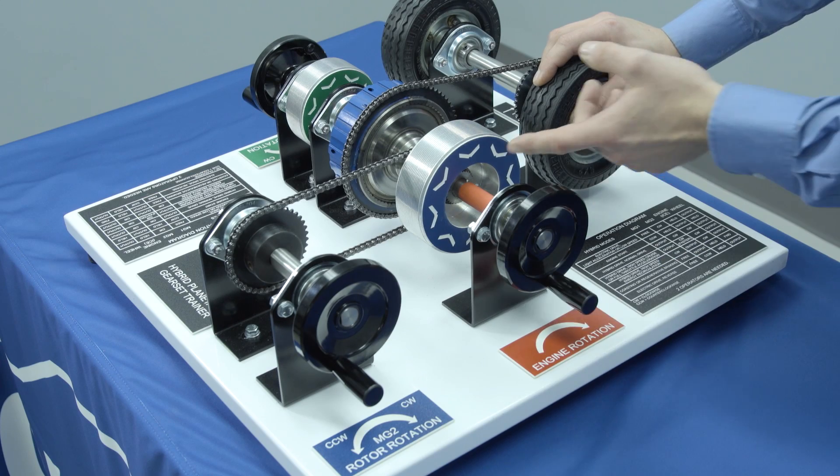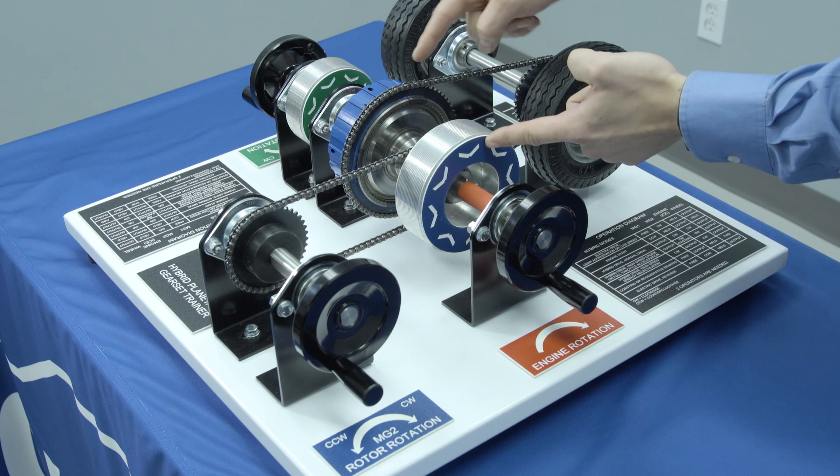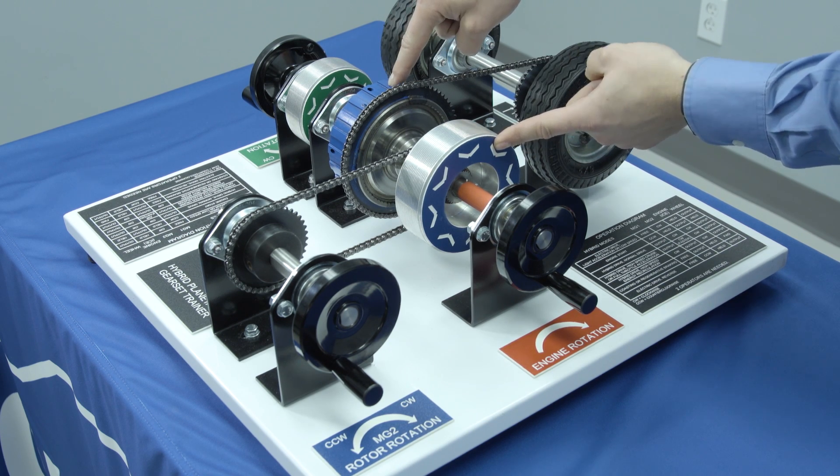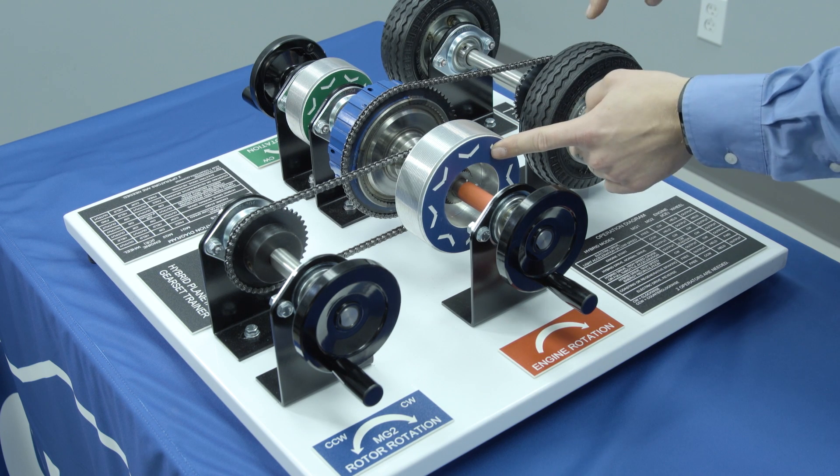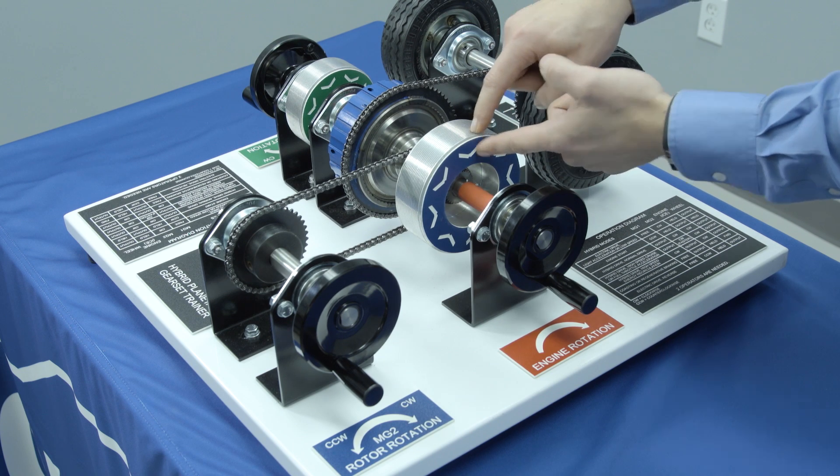Last but not least we have MG2. You'll notice MG2 is directly connected to the planetary gear set. It is in fact connected to the internal or ring gear, but you'll notice that's also connected to the wheels. So anytime the wheels are turning MG2 is turning, and anytime MG2 is turning the wheels are turning.